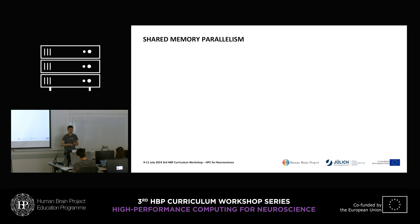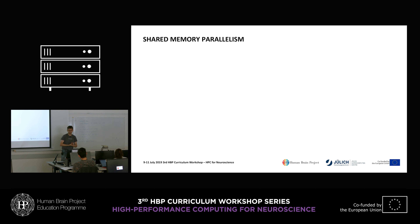Now, shared memory parallelism — what does this actually mean? Within one compute node, which currently has 24 cores that share memory and can all access the same memory, we can use shared memory parallelism: a parallelism that accesses the same kind of data.